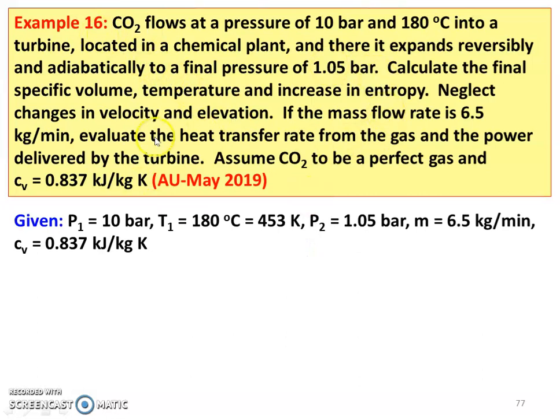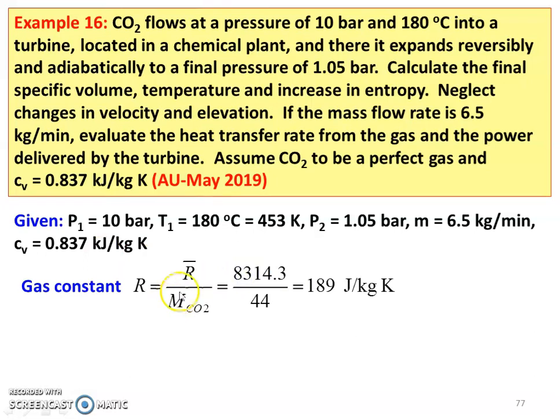We have to write down the given data. P1 equal to 10 bar, T1 equal to 180 degrees Celsius, which is 453 Kelvin, P2 equal to 1.05 bar. Mass M equal to 6.5 kg per minute, and CV equal to 0.837 kJ per kg Kelvin. Gas constant for CO2: R equal to universal gas constant R bar divided by the molecular weight of CO2, so 8314.3 divided by 44 equal to 189 joules per kg Kelvin.